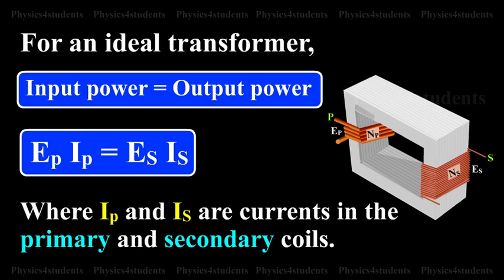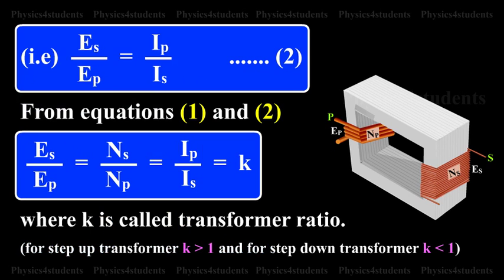For an ideal transformer, input power is equal to output power. EP × IP = ES × IS, where IP and IS are currents in the primary and secondary coils. That is, ES/EP = IP/IS. This is equation number two.